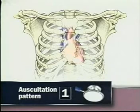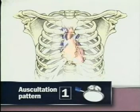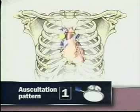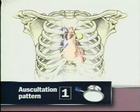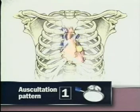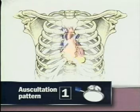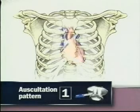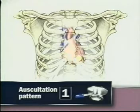For auscultation of the heart, you may choose between two sequences. In the first, start with the diaphragm of the stethoscope and progress from the right second interspace to the left second interspace and down the left sternal border to the apex. Then, with the bell of the stethoscope, listen again at the mitral and tricuspid areas.